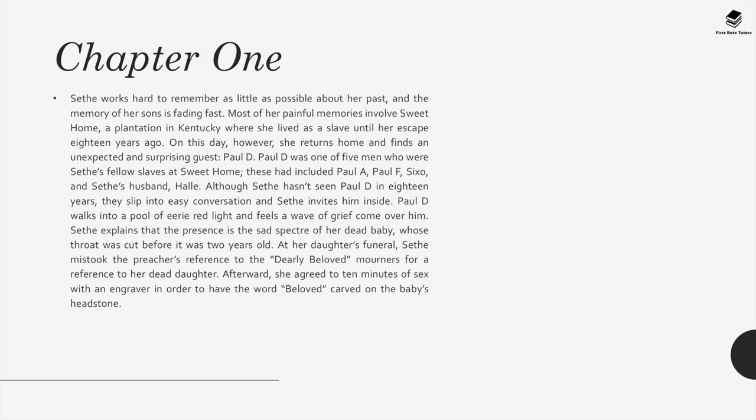On this day, Sethe returns home and finds an unexpected guest: Paul D., one of the five men who were her fellow slaves at Sweet Home — including Paul A., Paul F., Sixo, and Sethe's husband Halle. Although Sethe hasn't seen Paul D. in 18 years, they slip into easy conversation. Paul D. walks into a pool of eerie red light and feels a wave of grief. Sethe explains that the ghost is a sad spectre of a dead baby whose throat was cut before it was two years old. She had agreed to ten minutes of sex with an engraver in order to have the word 'Beloved' carved on the baby's headstone.